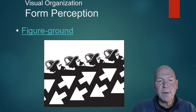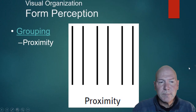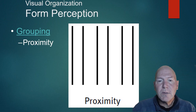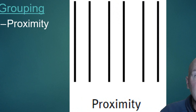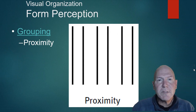In a reversible figure-ground drawing, if you see firemen going downstairs, you're seeing the black as the figure and white as the ground; if you see arrows going up, you're seeing the white as figure and black as ground. Proximity is another Gestalt principle — we group things together that are close to each other. For example, lines that are closer together appear to be grouped, just as students sitting together in a gymnasium appear to belong to the same group.